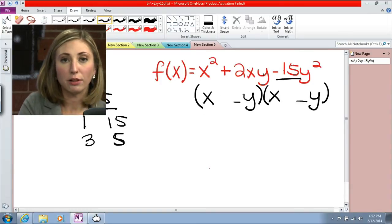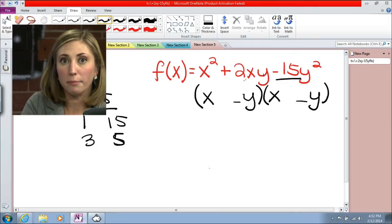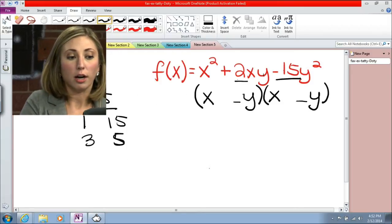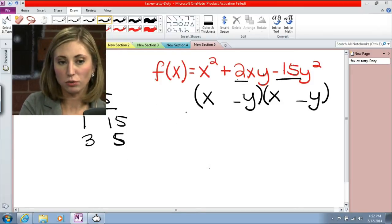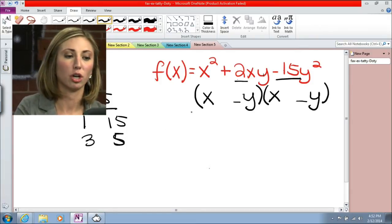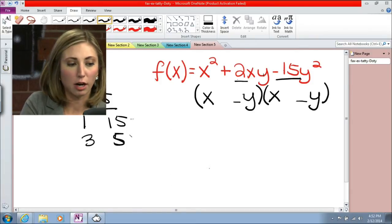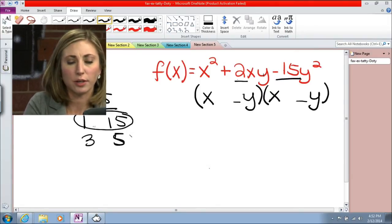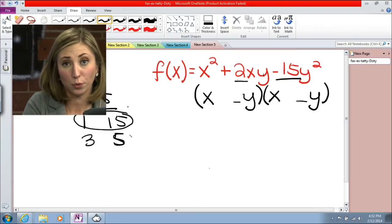Now, the way that we choose is by looking at the coefficient of our middle term. So in this case, the coefficient of our middle term is 2. Our factors that we choose need to also add to give us that middle term of 2. Now, if you look at our options, we have 1 and 15. There's no way that these are going to add or subtract to give us 2.